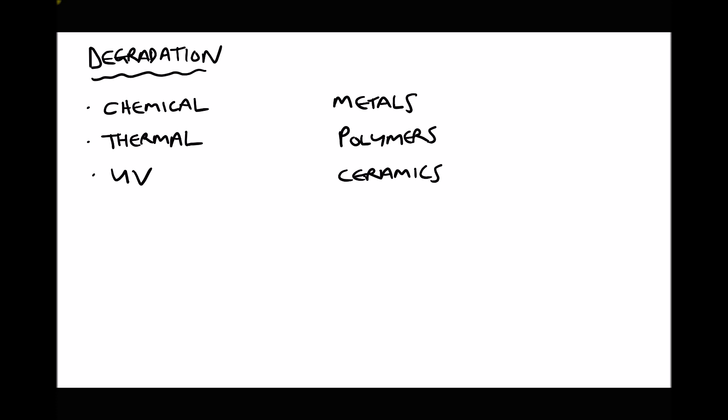We're going to apply each of these to our three different classifications of engineering materials: metals, polymers, and ceramics. For metals we'll look at chemical degradation or corrosion. For polymers we'll look at thermal and UV degradation, and for ceramics we'll look at an example of thermal degradation.